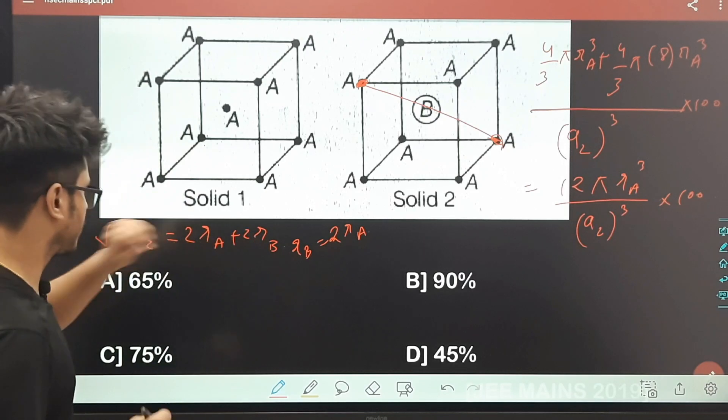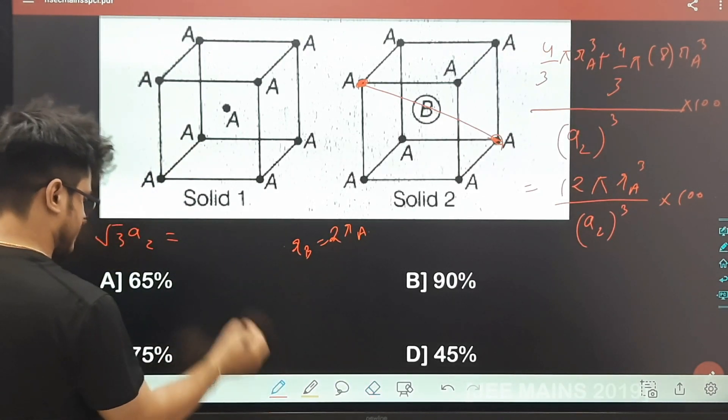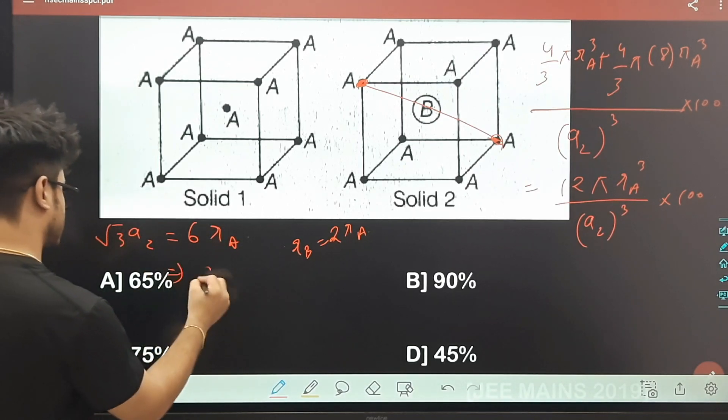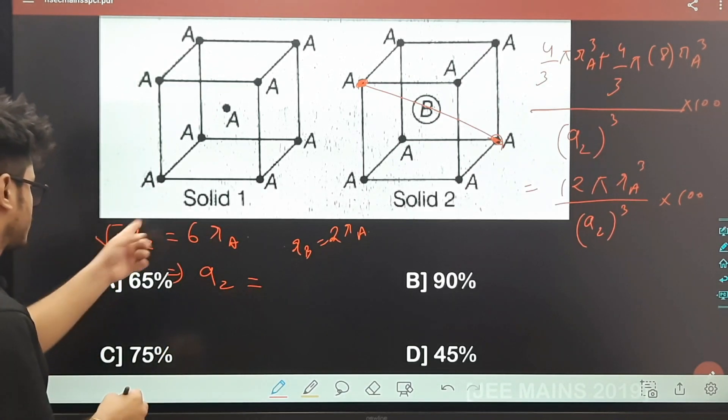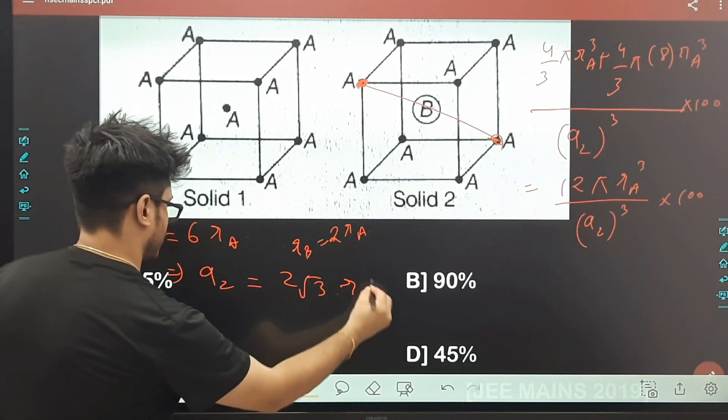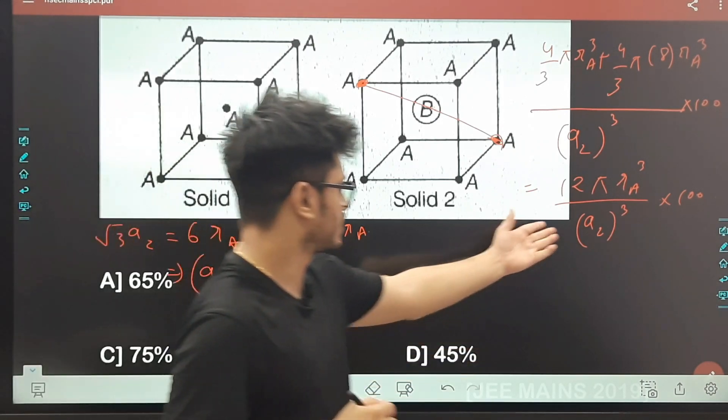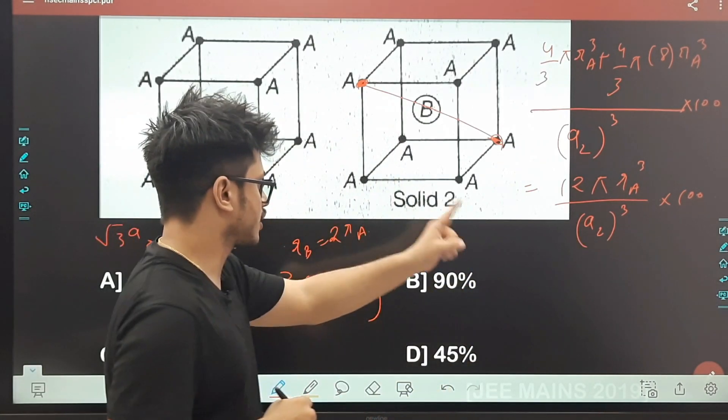Bahut simply ye ho jayega 6rₐ. And if this is 6rₐ, you can easily write a₂ = 6rₐ/√3 = 2√3 rₐ. Yes, a₂ is 2√3 rₐ. Just put it over there, and 2√3 ka cube chahiye mujhe.